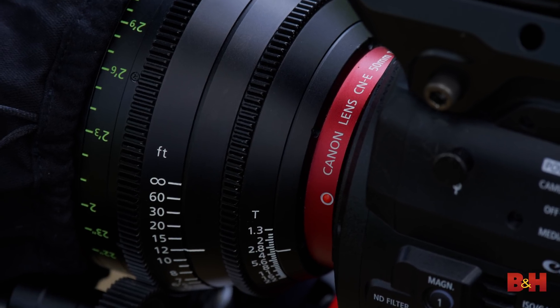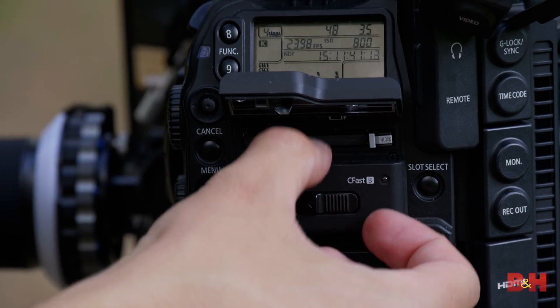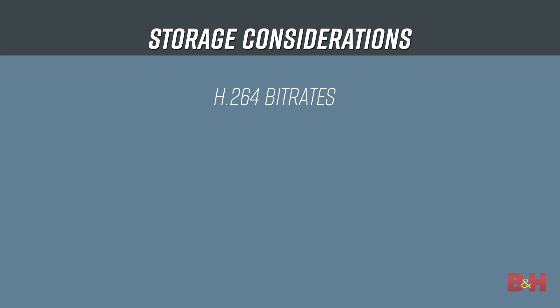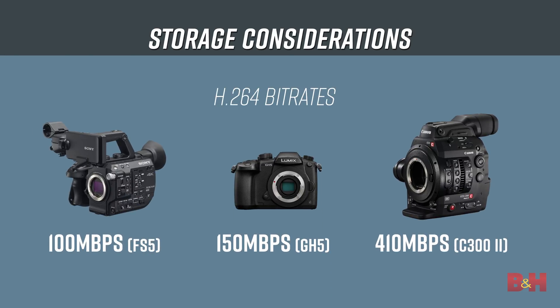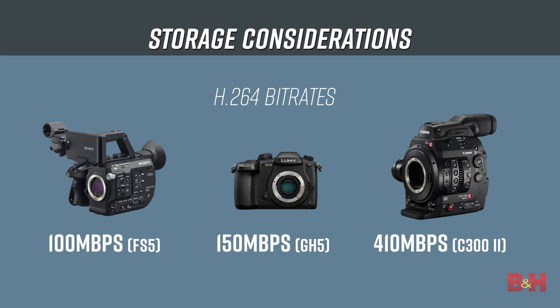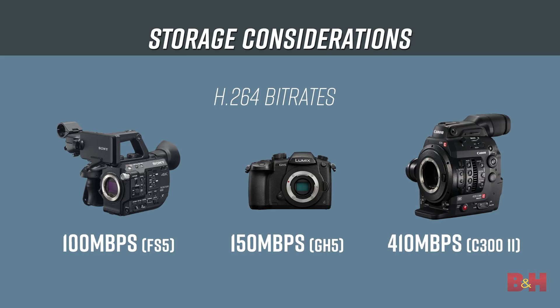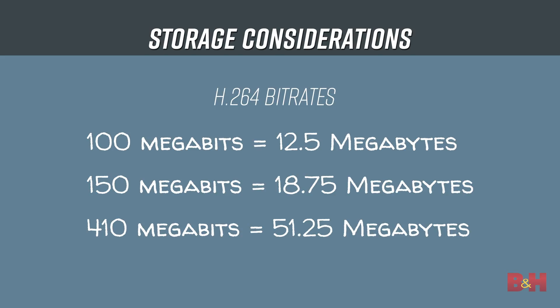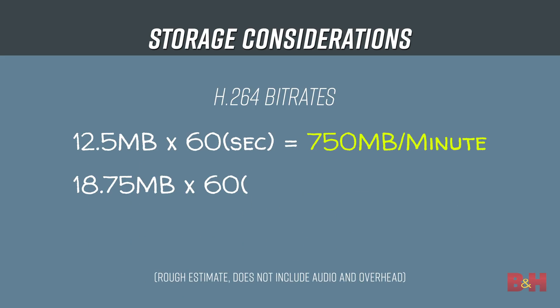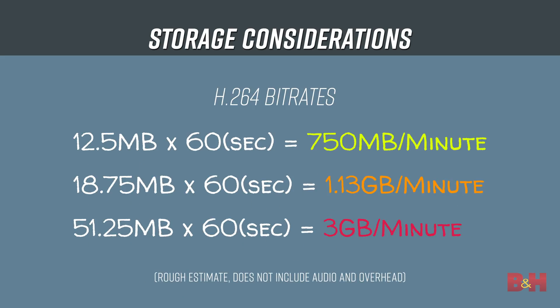We shot with 3 cameras, 4 formats, and across 3 days. All of our cameras utilized some variant of H.264 compressed video with bitrates of 100 megabits per second, 150 megabits per second, and 410 megabits per second. Along with a handful of ProRes recordings that also run around 440 megabits per second, we're looking at anywhere from roughly 750 megabytes per minute to 3 gigabytes per minute, depending on the bitrate and amount of footage.